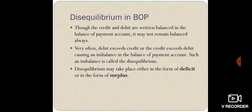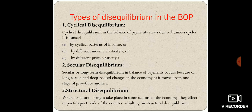In the balance of payment format, very often debit exceeds credit or credit exceeds debit, causing imbalance in the balance of payment account. Such an imbalance is called disequilibrium. If there is no equal balance between credit and debit — that is, imports and exports — then it is called disequilibrium. Disequilibrium may take place either in the form of a deficit or in the form of a surplus.